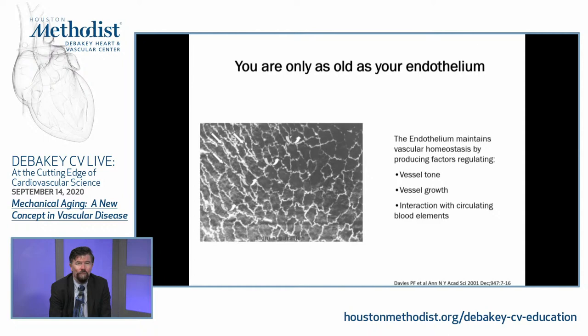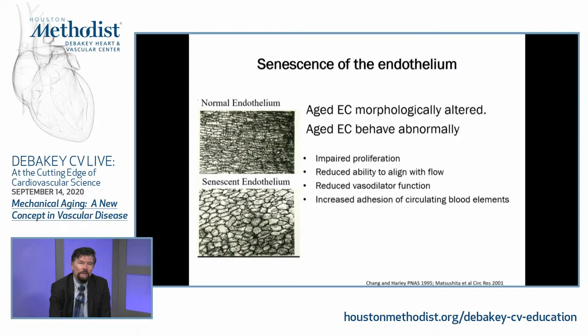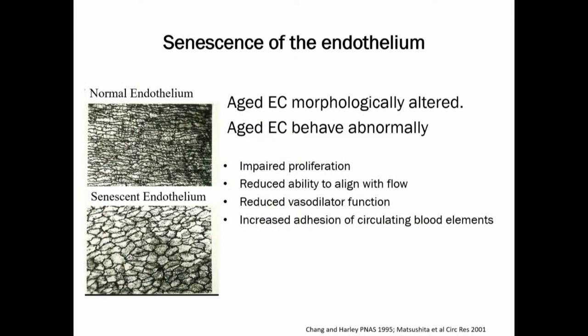Things begin to stick, and that's what we see here. We're looking at normal endothelial cells nicely aligned with flow, and senescent endothelial cells which are more polygonal — like cobblestone paving. They don't line up very well with flow and are not very functional. They make less nitric oxide, have less vasodilator function, have impaired proliferation, and things stick to them because they're expressing adhesion molecules and chemokines that allow white blood cells to adhere. The aged endothelium is abnormal.